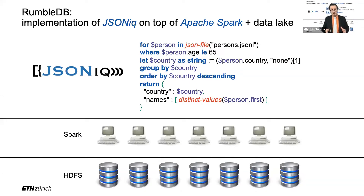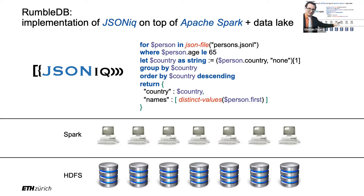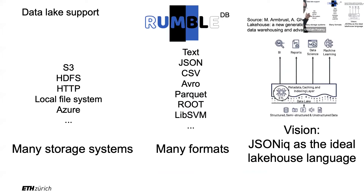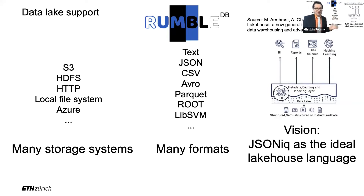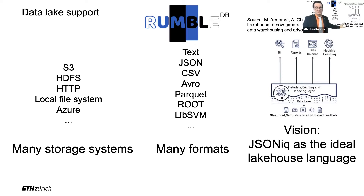RumbleDB is an implementation of the JSONiq language, which is a cousin of XQuery — it's 95% XQuery. You can recognize the beautiful FLWOR expressions. It can run on clusters of machines — potentially hundreds or thousands of machines — executing on terabytes or petabytes of data on HDFS, S3, Azure Blob Storage, and probably Google Cloud too. We view JSONiq as the ideal lakehouse language for the whole pipeline from data cleaning and validation all the way to machine learning.